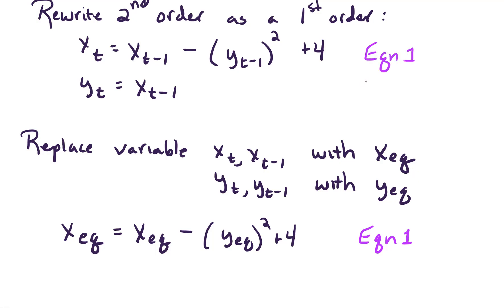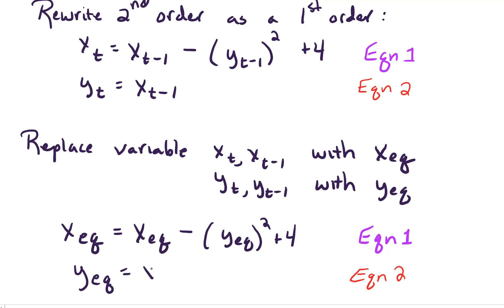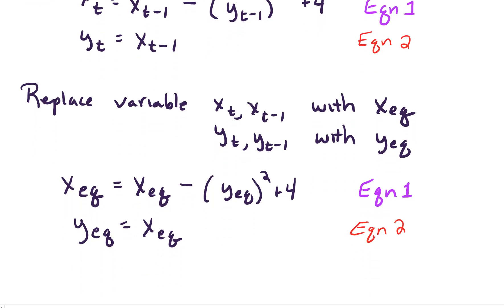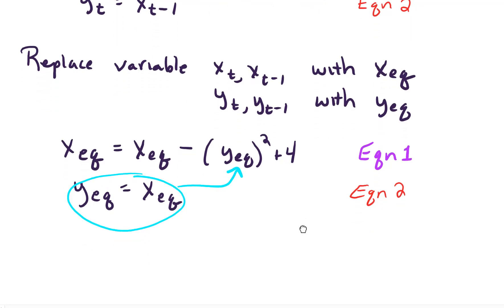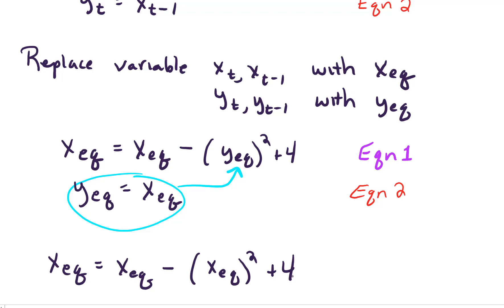After substitution, equation 1 gives us x_eq equals x_eq minus y_eq squared plus 4. From equation 2, we know that y_eq equals x_eq — we replace all the x's and y's with their respective fixed points. This is really helpful because we can substitute y_eq equals x_eq directly into the first equation, giving us x_eq equals x_eq minus x_eq squared plus 4.